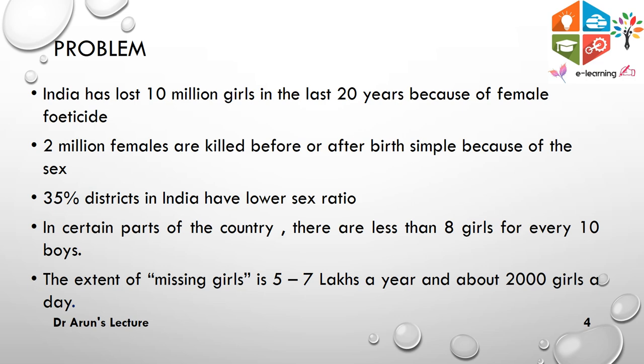India has almost lost 10 million girls in the last 10 years, and almost 2 million females have been purposely killed after birth simply because of their sex being female. 35% of districts in India have a lower sex ratio, and in certain parts of the country there are less than 8 girls for every 10 boys. The extent of missing girls is about 5 to 7 lakhs per year, or about 2,000 girls a day.